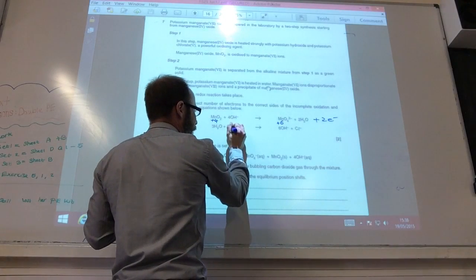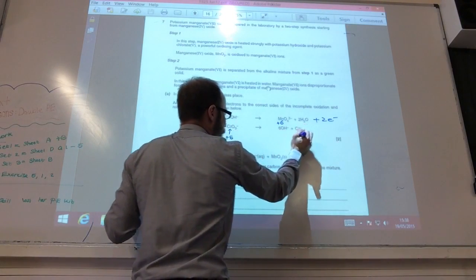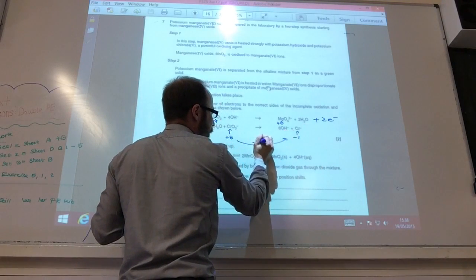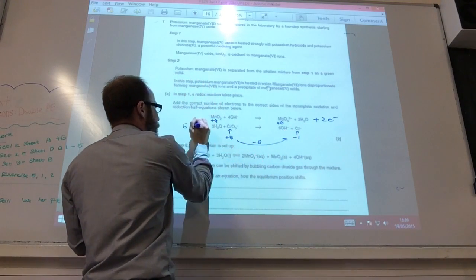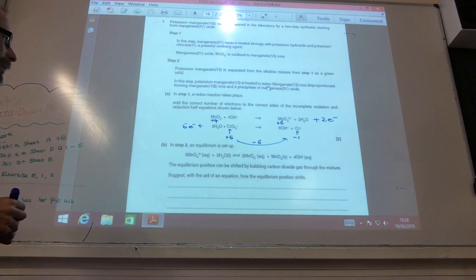Chlorine there is in oxidation state plus 5 and there is minus 1. So that's actually changed. That's gone down by 6. So I must have added 6 electrons to that one.